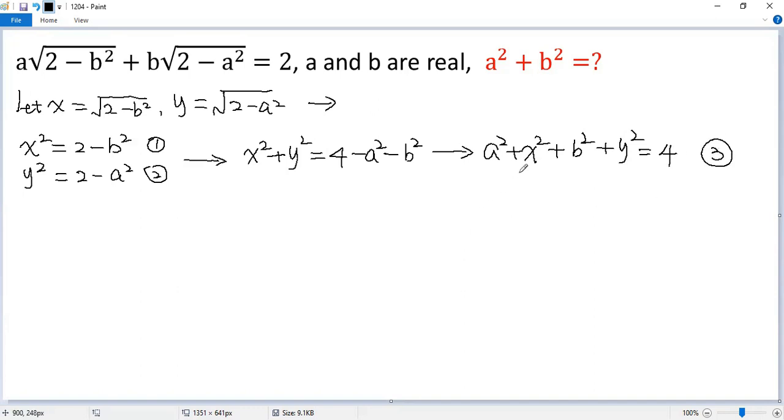We try to create a perfect square. So we need a term 2ax and 2by. But look at the given condition. It is actually ax plus by equals 2. Let's write it down.